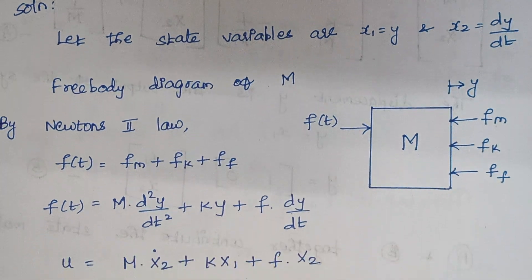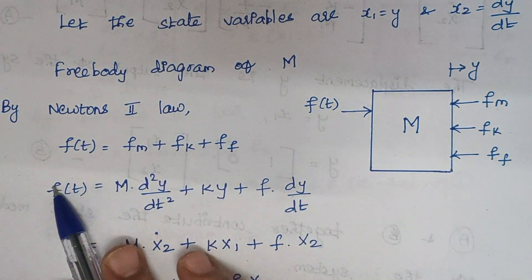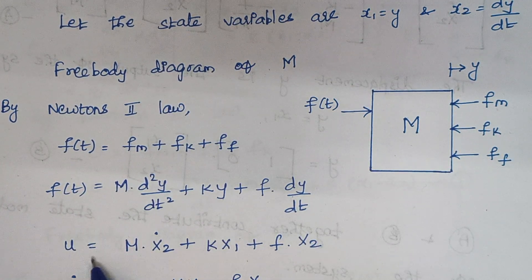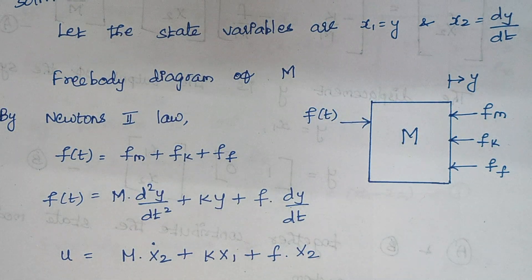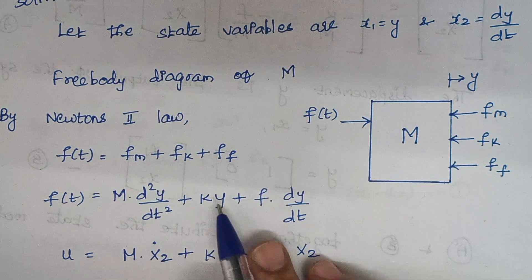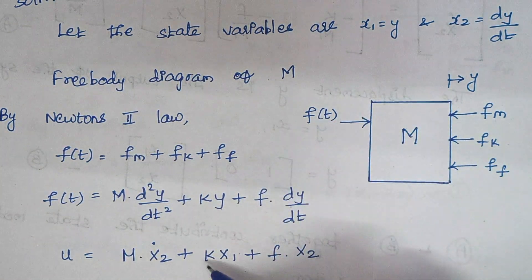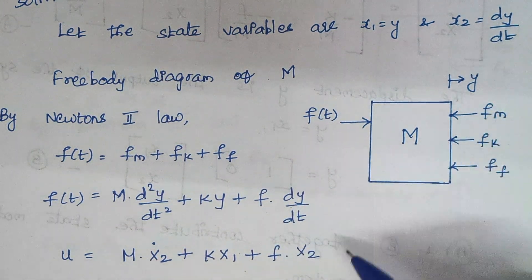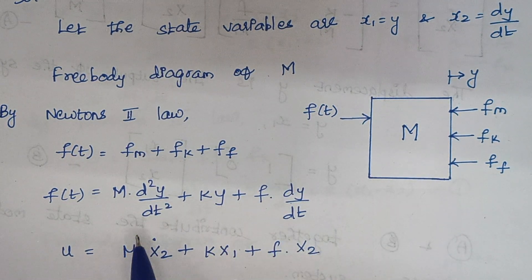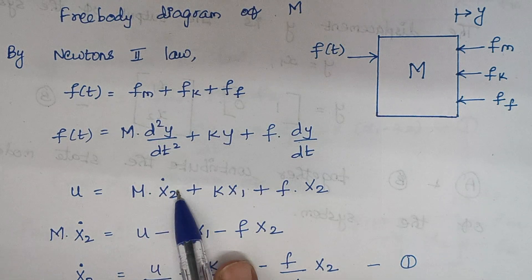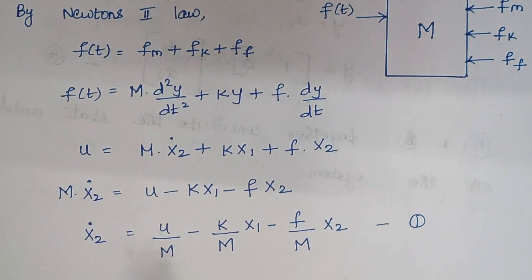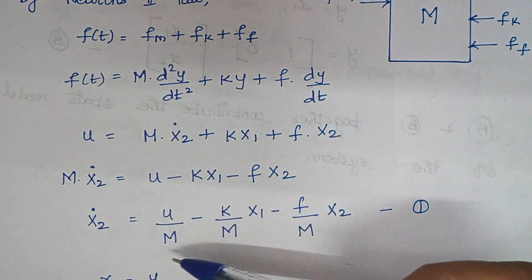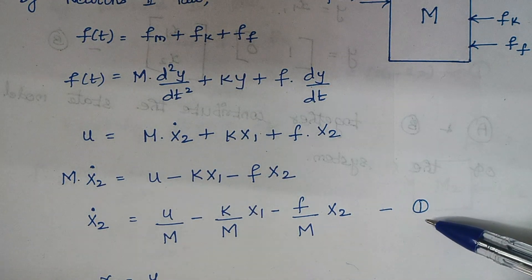Now replace these values. f(t) is our input, represented as u. So u = m·(d²y/dt²) + k·y + f·(dy/dt). Since dy/dt is x2, d²y/dt² is x2 dot, k·y is k·x1, and f·(dy/dt) is f·x2. Rearranging this expression to find x2 dot: move the remaining terms to the left-hand side (sign change), then move m to the right-hand side. This gives expression number 1.